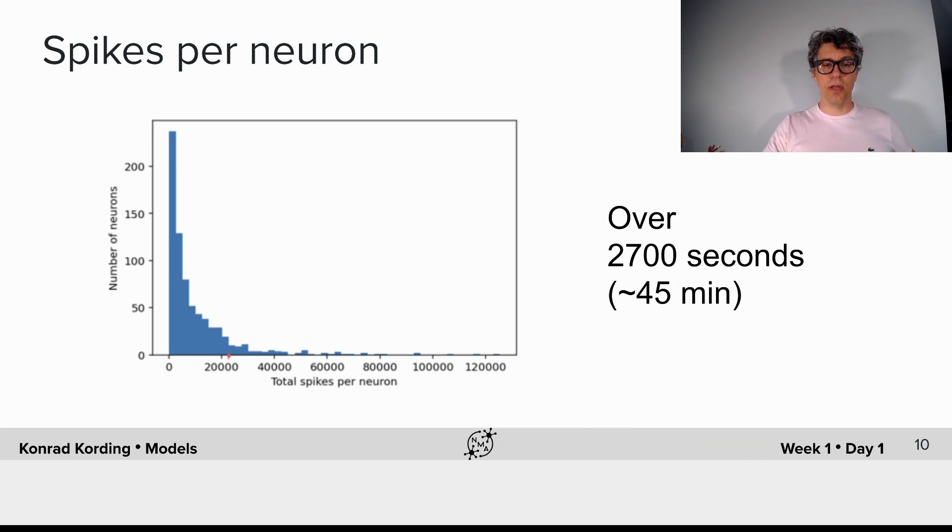Then there are some neurons that fire 20,000 times, and even some that fire well more than 120,000 times. People not used to neuroscience are often shocked when they first see that a relatively small number of neurons produce really high firing rates, so much so that a relatively small number of neurons might contribute considerably to the overall spike count.